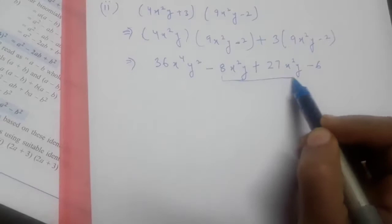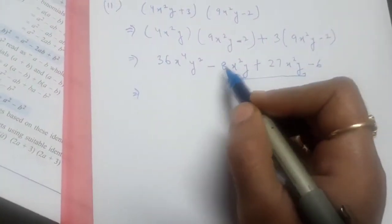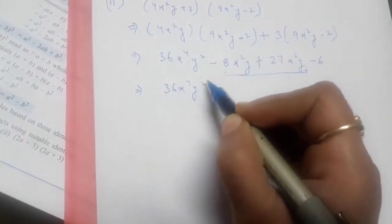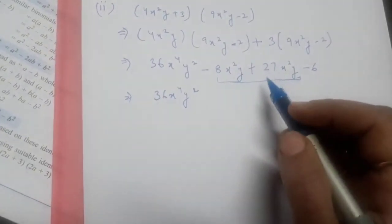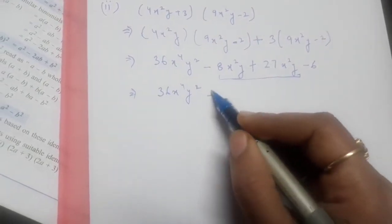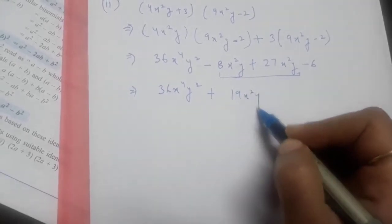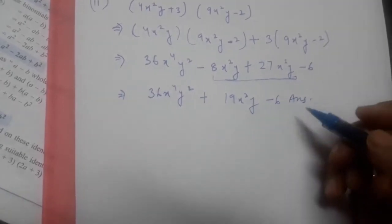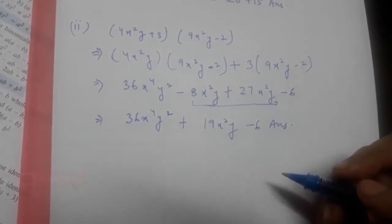These two terms −8x²y and +27x²y are alike, so we will perform operations on them. −8x²y + 27x²y gives +19x²y. So our answer is 36x⁴y² + 19x²y − 6. Hope the second part is clear.